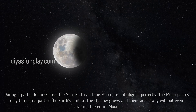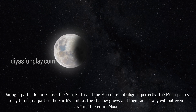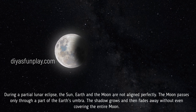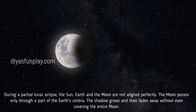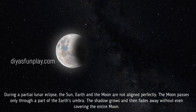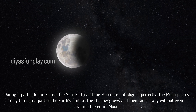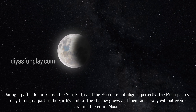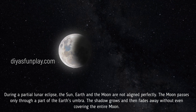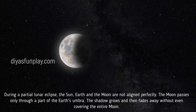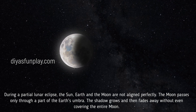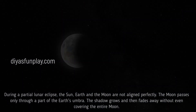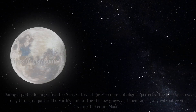During a partial lunar eclipse, the Sun, Earth, and the moon are not aligned perfectly. The moon passes only through a part of the Earth's Umbra. The shadow grows and then fades away without even covering the entire moon.